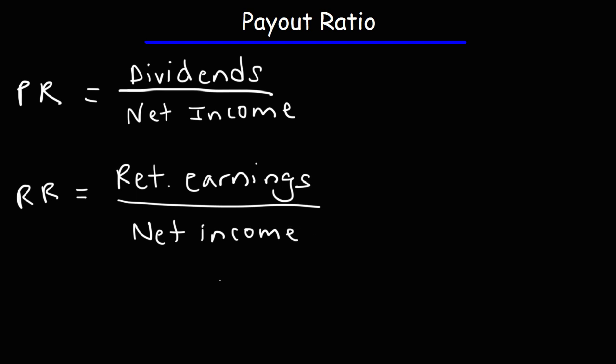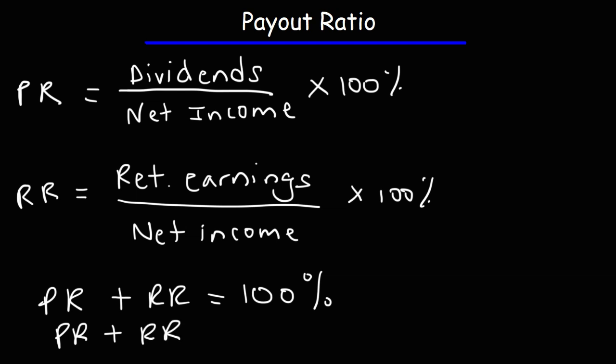Now, it's important to understand that the payout ratio, when expressed as a percentage - you can multiply this by 100% if you want to - plus the retention ratio, these two must add up to 100%. Or, if you have it in decimal form, they have to add up to 1.